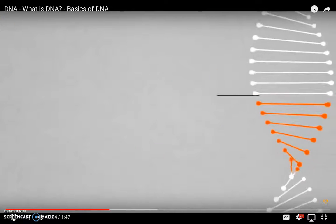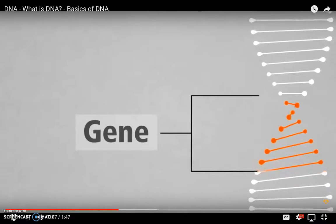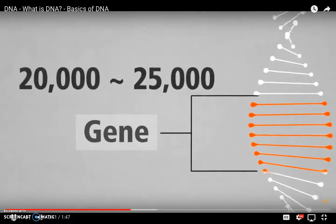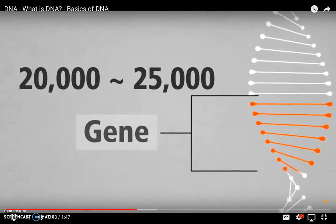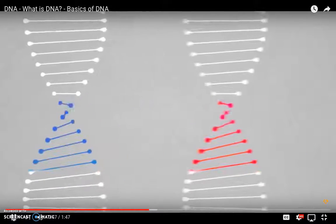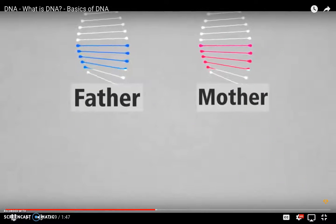In humans, genes vary in size from a few hundred DNA bases to more than two million bases. And we have an estimated 20,000 to 25,000 of these genes passed during reproduction. Each person has two copies of each gene, one inherited from each parent.